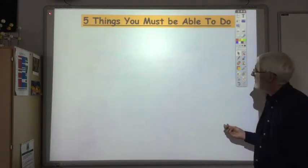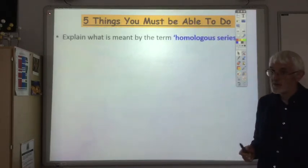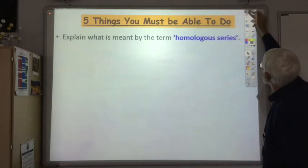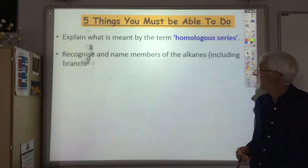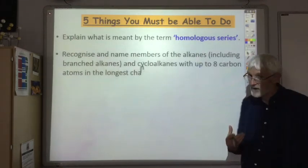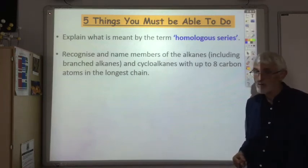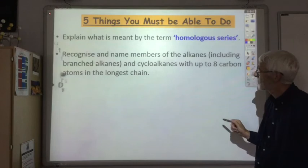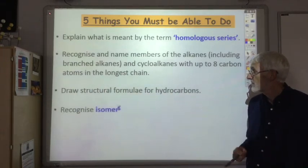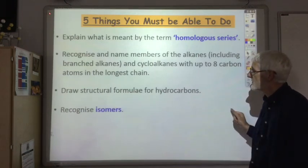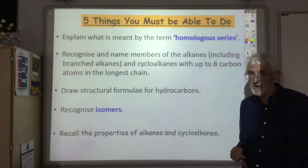There are five things you should be able to do. You should be able to explain clearly what is meant by the term homologous series. You should be able to recognise and name members of the alkanes, including branched alkanes and cycloalkanes with up to eight carbon atoms in the longest chain. You should be able to draw a structural formula for hydrocarbons, recognise isomers, and recall the properties of alkanes and cycloalkanes.